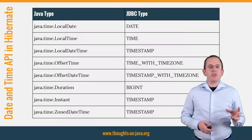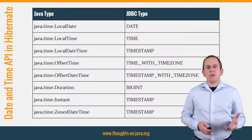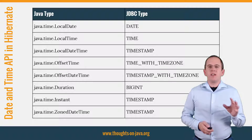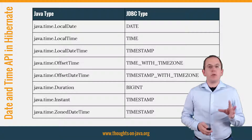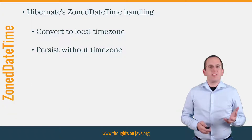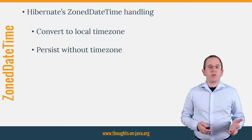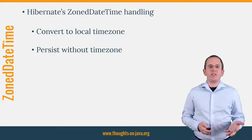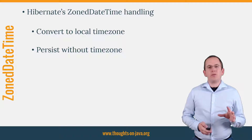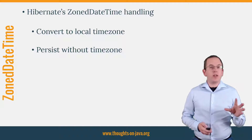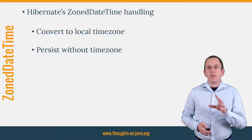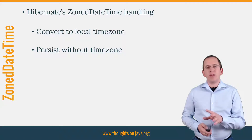The mapping of Duration and Instant are pretty obvious. But the mapping of ZonedDateTime requires a more detailed explanation. Hibernate maps it to a JDBC timestamp without timezone information. So, what happens when you persist a ZonedDateTime with Hibernate and why does it not store the timezone information? Hibernate converts the ZonedDateTime to the local timezone and stores it in the database without timezone information.